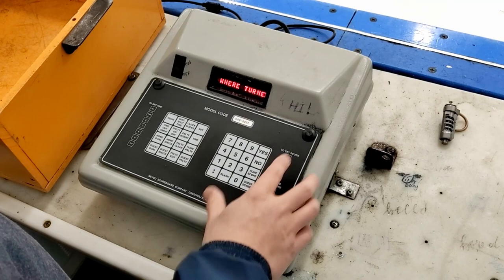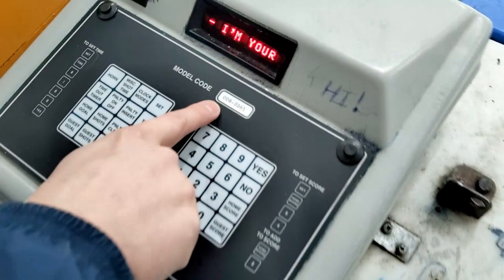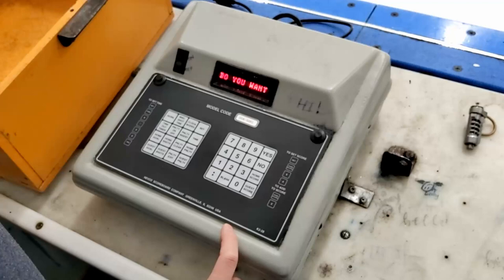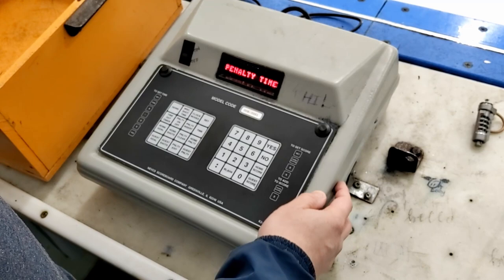First, turn on the score clock. It'll ask if you want to start where you turned it off - you can say no. It says put in the model code, so enter 0-0-0-8-3-2-6-1. It'll ask do you want to use the shot clock, say no. Use the penalty timeout, no.